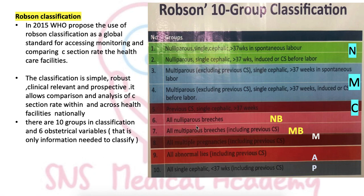Group 6 is all nulliparas with breech presentation, and Group 7 is all multiparas with breech presentation, including those with previous C-sections. You can remember these with the mnemonic MB — M for multipara breech, B for breech.